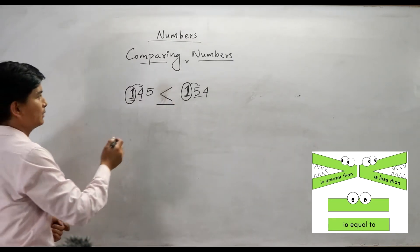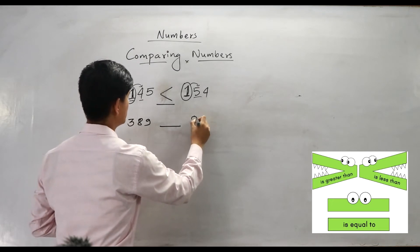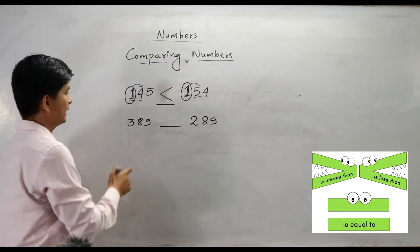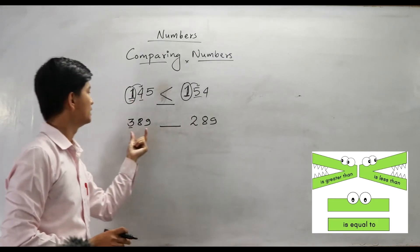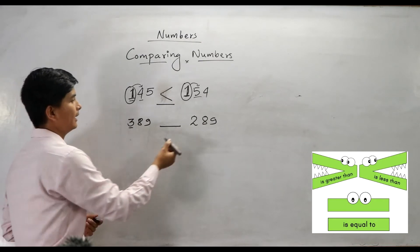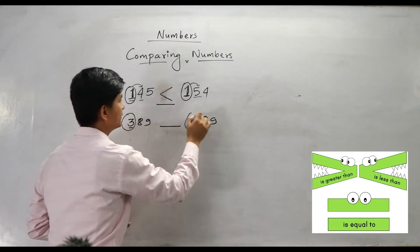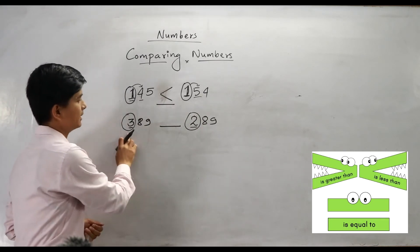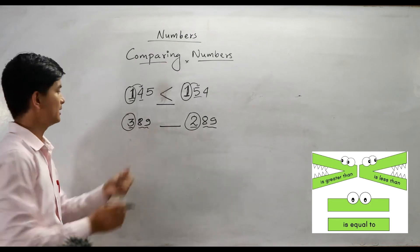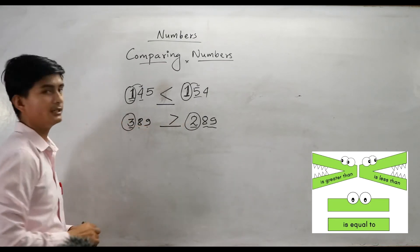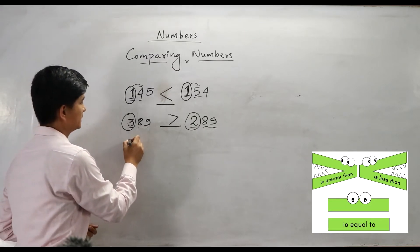One more example — 389. We look at the hundreds place first. Which one is greater: 2 or 3? Three is greater, so we apply the greater than symbol.